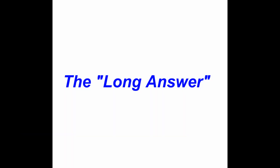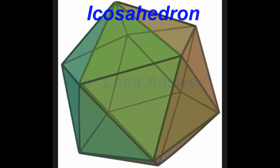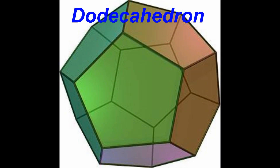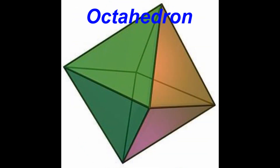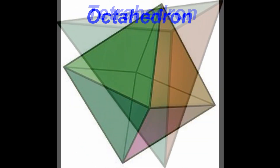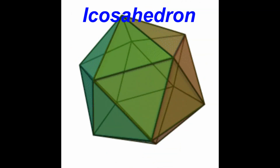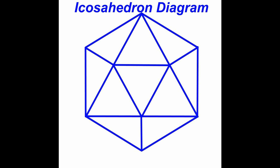Now here is the long answer. Almost all geodesic domes are based on the icosahedron, but geodesic domes can be made from other platonic solids such as the dodecahedron, the octahedron, or the tetrahedron. The icosahedron is a geometric solid that has 20 sides, or faces. Each face of the icosahedron is made from an equilateral triangle.